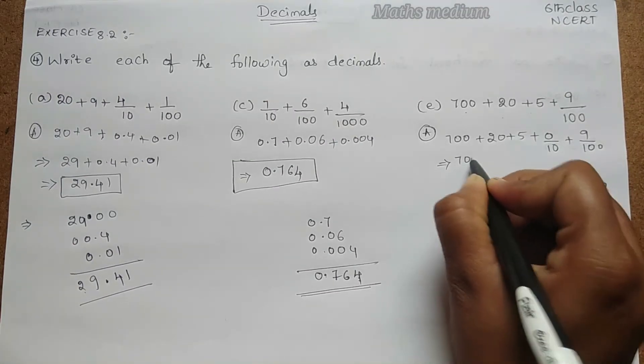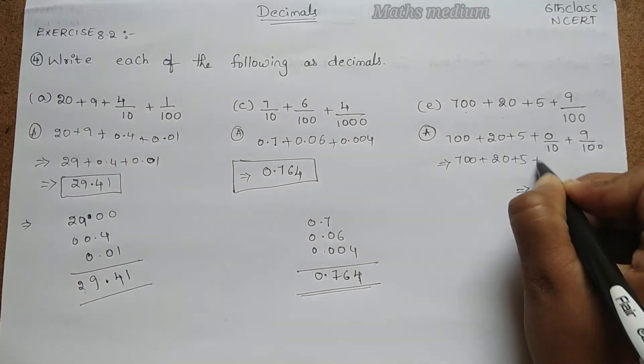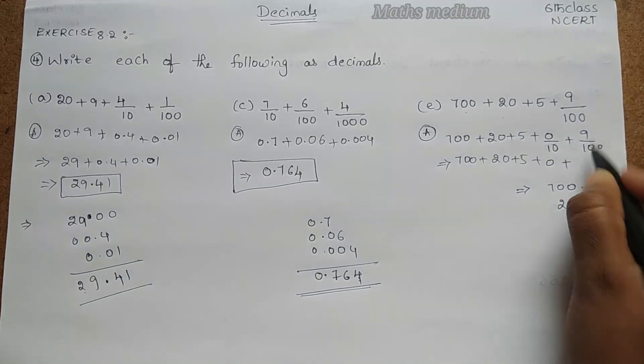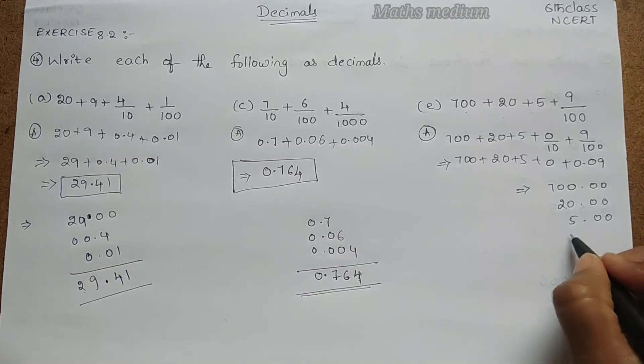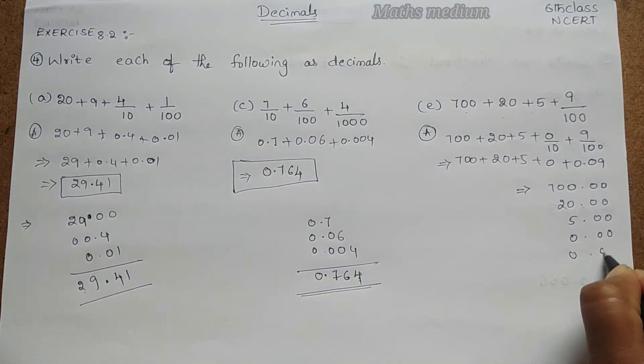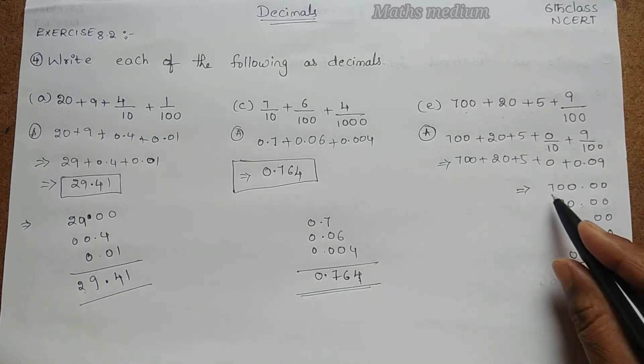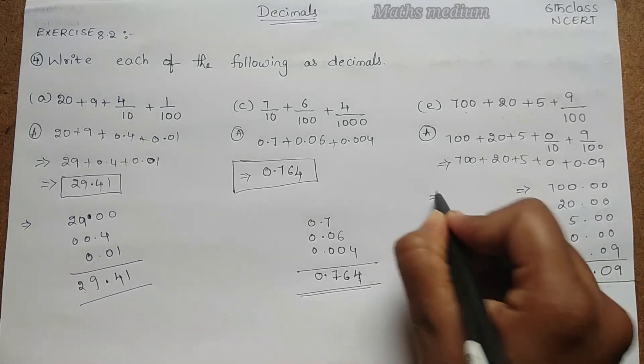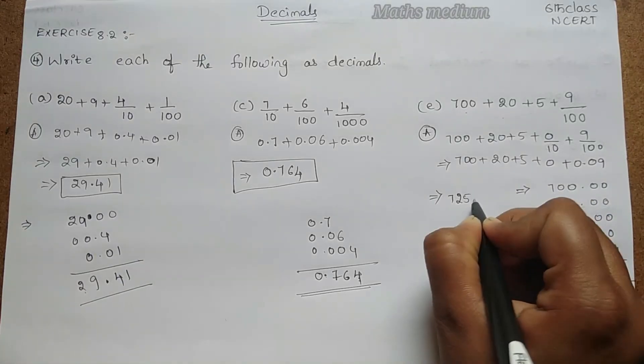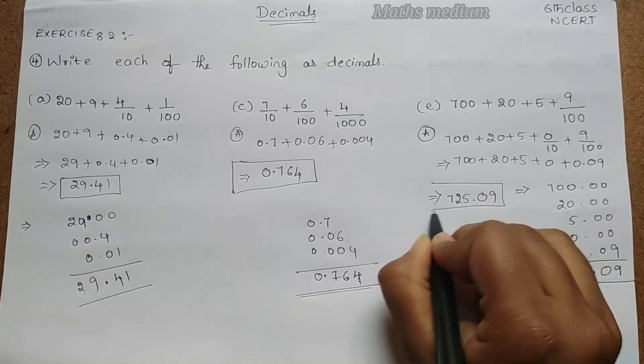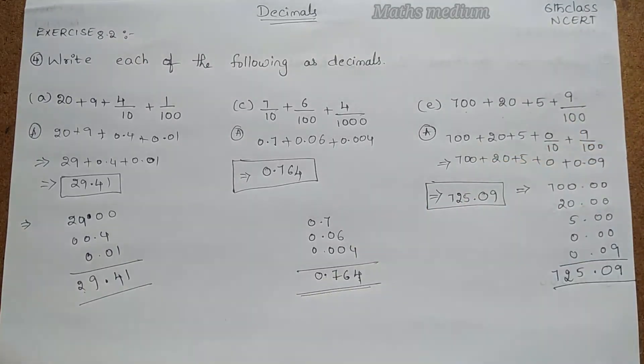Now coming to the decimals, how are we going to convert this? This is 700 + 20 + 5, plus this is as 0, plus here 0.09. So here 0.00, next 0.09 as the 100th place. So by adding this we get 100th place as 9 and 10th place as 0. By getting point here, this is 5 at 1's place, in 10's place we get 2, and 100's place as 7. So this is the answer for this question, that is 725.09 as the answer for the given form of the decimals.